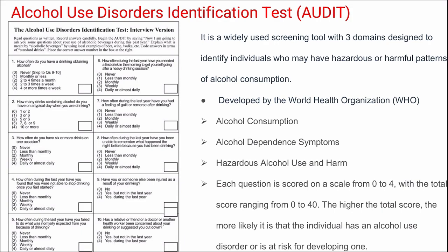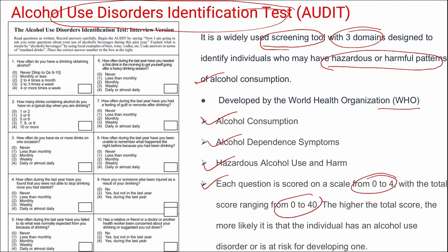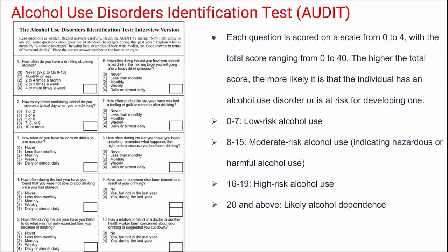Next is AUDIT — Alcohol Use Disorder Identification Test — a screening tool for alcohol use disorders developed by WHO, with three domains: alcohol consumption, alcohol dependence, and hazardous/harmful alcohol use. It is a 10-item questionnaire with each question scored 0 to 4, giving a total range of 0 to 40. A score of 0–7 indicates low risk, 8–15 moderate/hazardous risk, 16–19 high risk, and 20 and above suggests likely alcohol dependence.